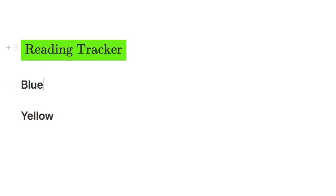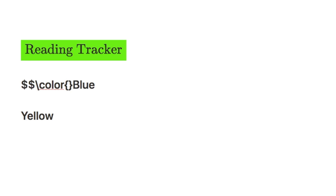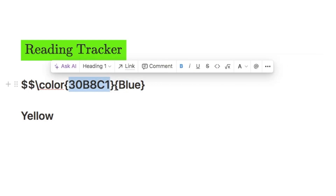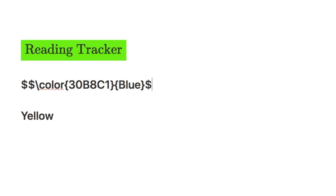This is very similar to the previous code but with a slight difference. Type two dollar signs, a backslash, and instead of writing 'colorbox', just write 'color'. Then add two curly brackets, and inside those paste the hex code for the blue colour. After that, add an opening and closing curly bracket for the text. Add two more dollar signs and it converts into the coloured text.